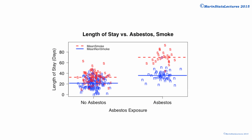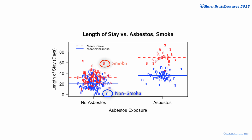Now let's suppose that the data looked as follows. The x-axis shows whether or not they've been exposed to asbestos, and the plotting characters — N or S, colored using blue or red — indicate a non-smoker and a smoker respectively. The lines added into this plot show the mean length of stay for each of the four groups formed by the smoking variable and the asbestos exposure variable.